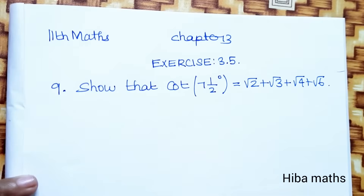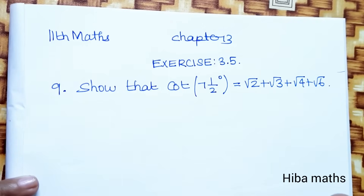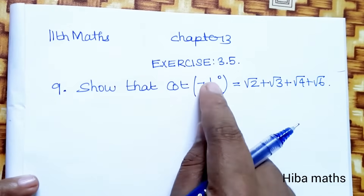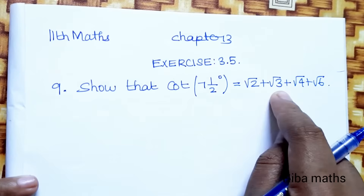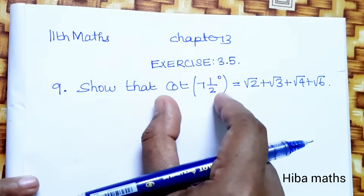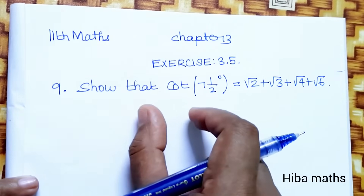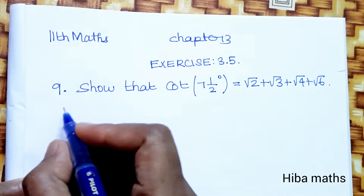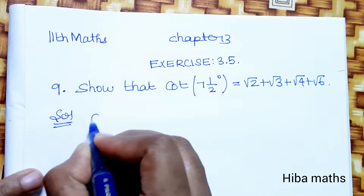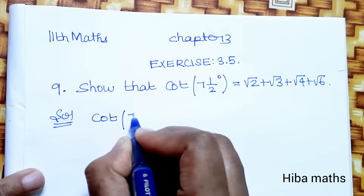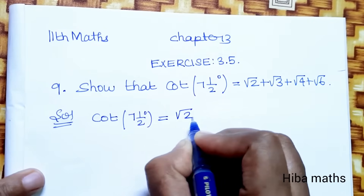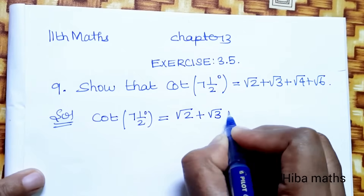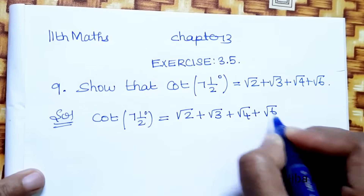Hello students, welcome to Hibamaks 11th Standard Max Chapter 3, Exercise 3.5, 9th Question. Show that cot(7.5°) is equal to √2 + √3 + √4 + √6. This is LHS, this is RHS — LHS is equal to RHS proof. Solution: given cot(7½°) = √2 + √3 + √4 + √6.